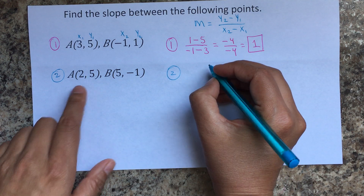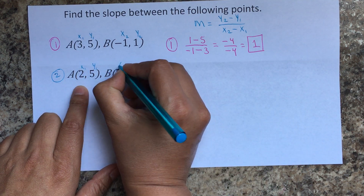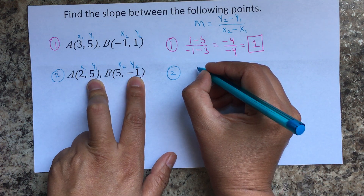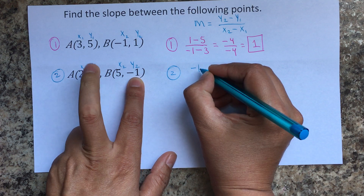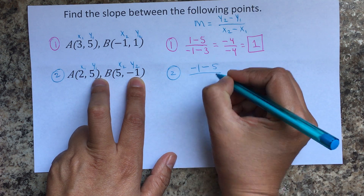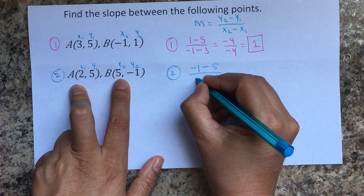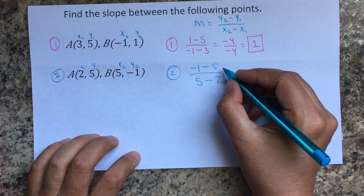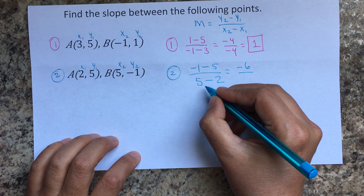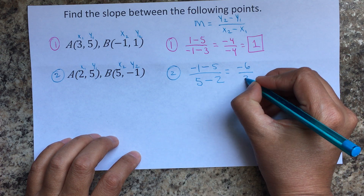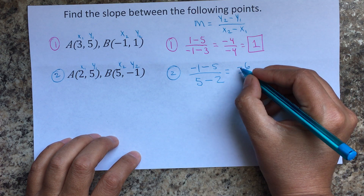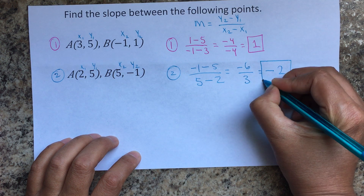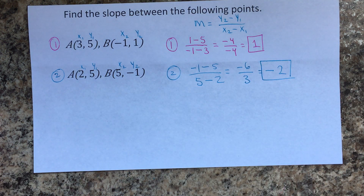Now for the second example, I have again x1, y1, x2, y2. We begin with y2 first. So negative 1 minus 5 over x2 minus x1. And so negative 1 minus 5 is negative 6, 5 minus 2 equals 3. Negative divided by positive is negative, and 6 divided by 3 is 2. So that's my slope for the second set of two points.